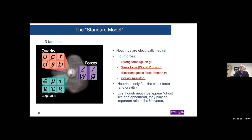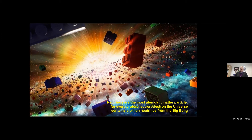Even though neutrinos appear ghost-like because of their weak interactions, they play an extremely important role in the universe. After the big bang, neutrinos were produced abundantly; this makes them one of the most abundant matter particles in the universe. For every proton, neutron, or electron, the universe contains a billion neutrinos left over from the big bang.